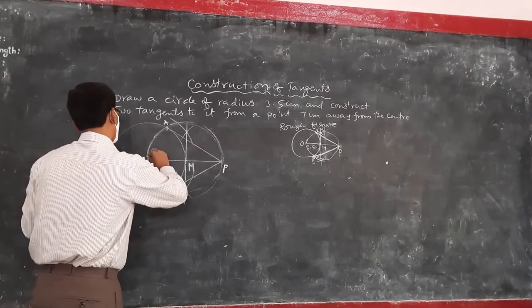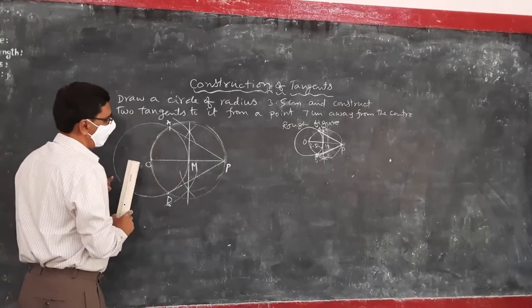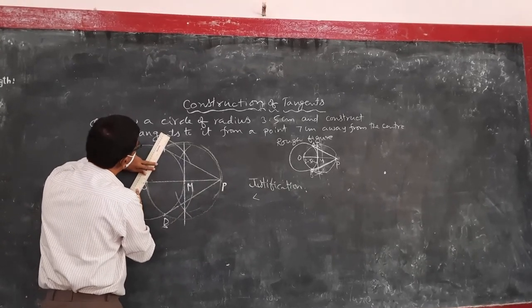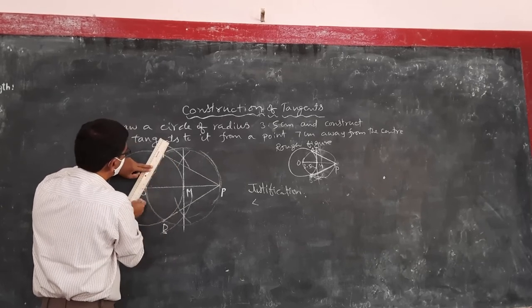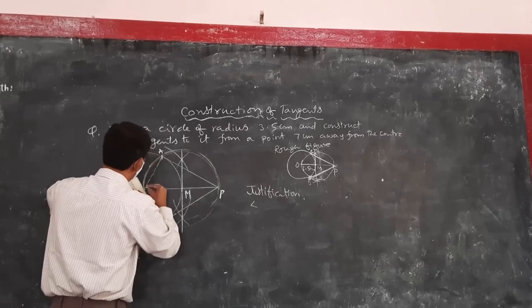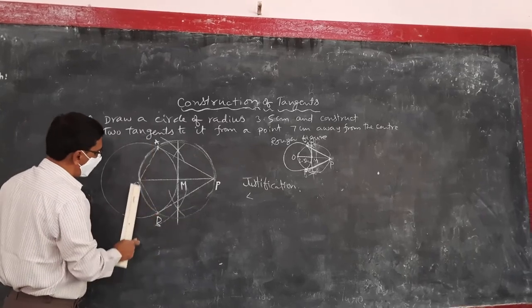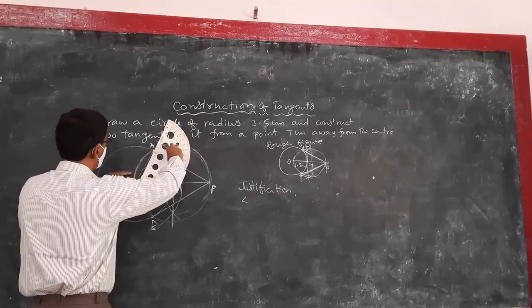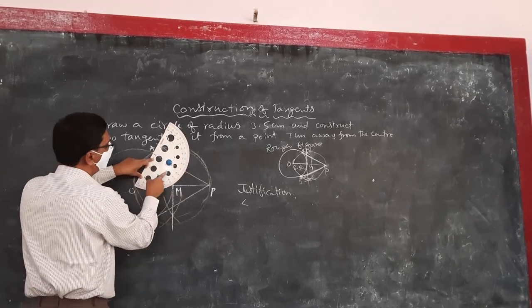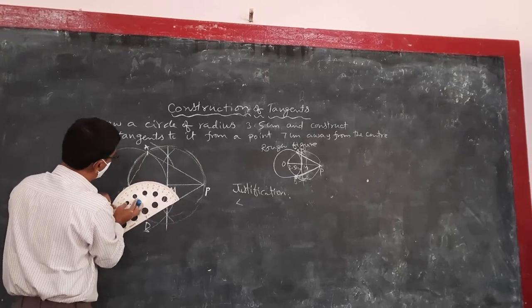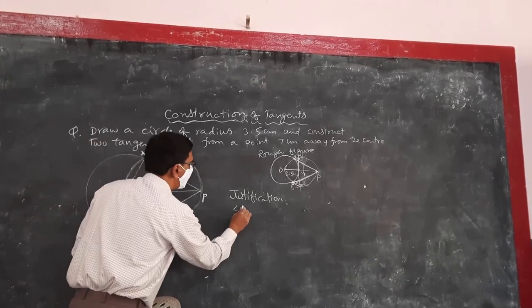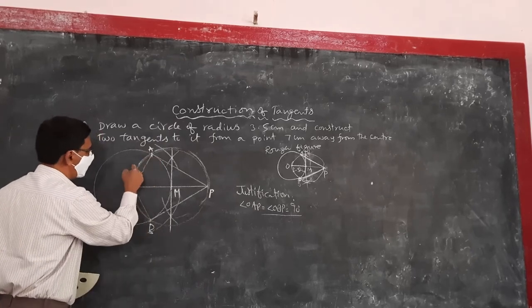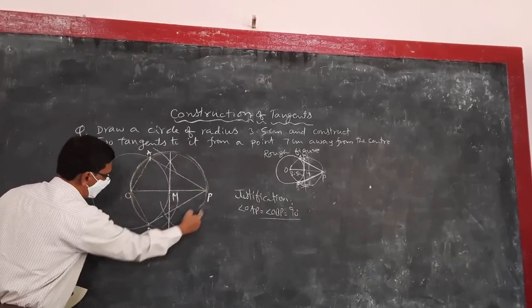And you may ask me, is this correct? We can have the justification like this. OAP and OBP, these are the tangent lines. Angle OAP is 90 degrees, similarly angle OBP is also 90 degrees. Meaning the angle is in the semicircle.